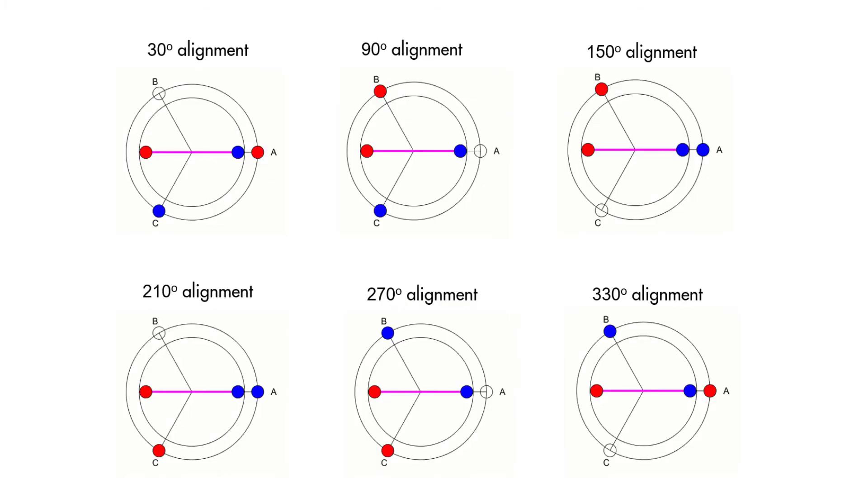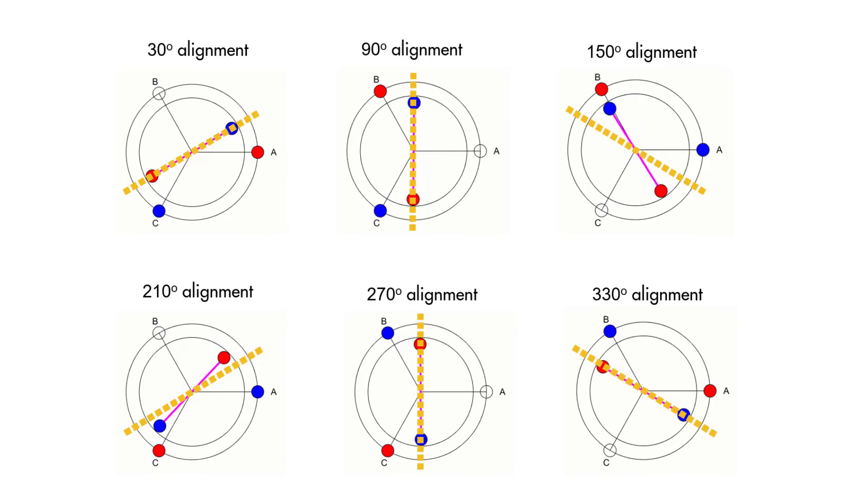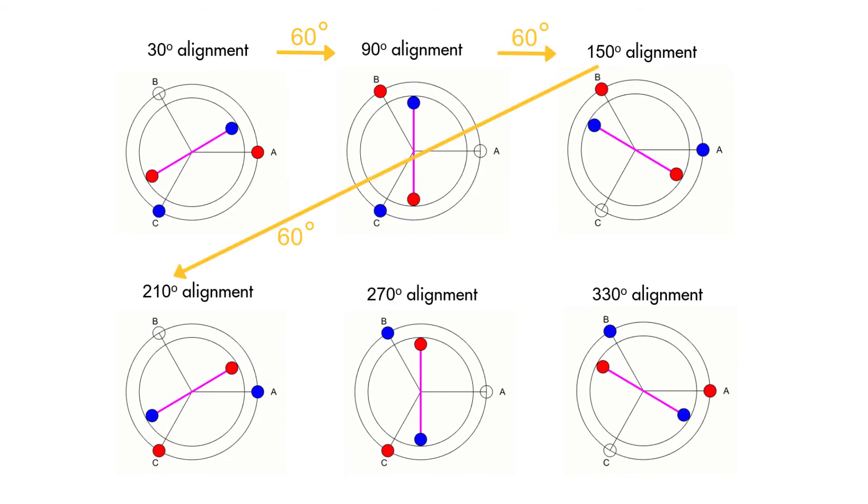There are six possible ways of energizing coil pairs. By commutating two phases at a time, we can make the stator magnetic field rotate, which will cause the rotor to turn and end up in the positions shown in the animation. The rotor angle is measured with respect to the horizontal axis, and there are six different rotor alignments, each 60 degrees apart from each other.